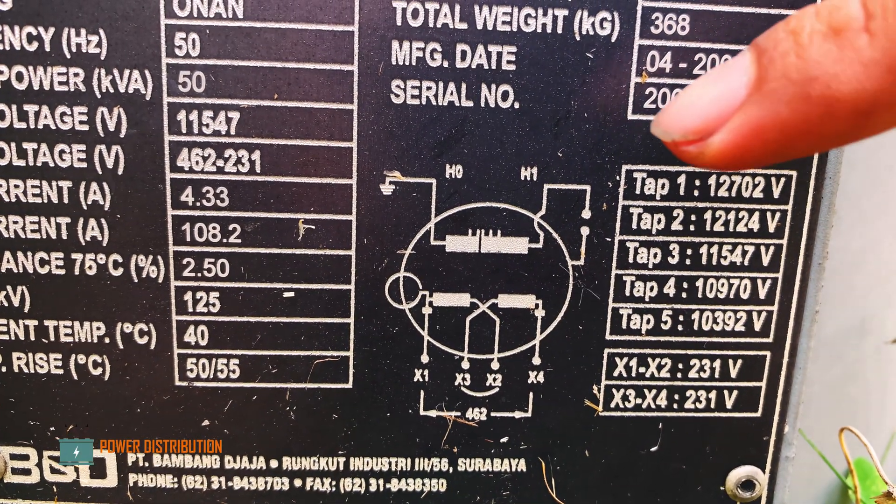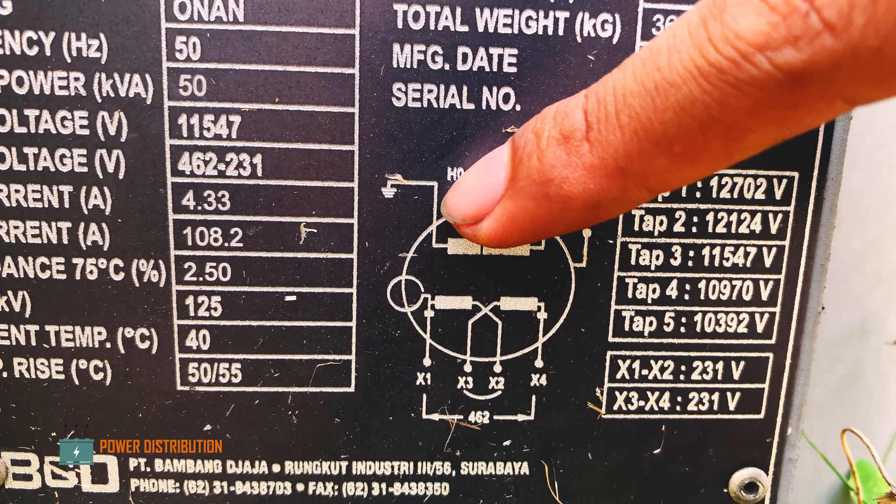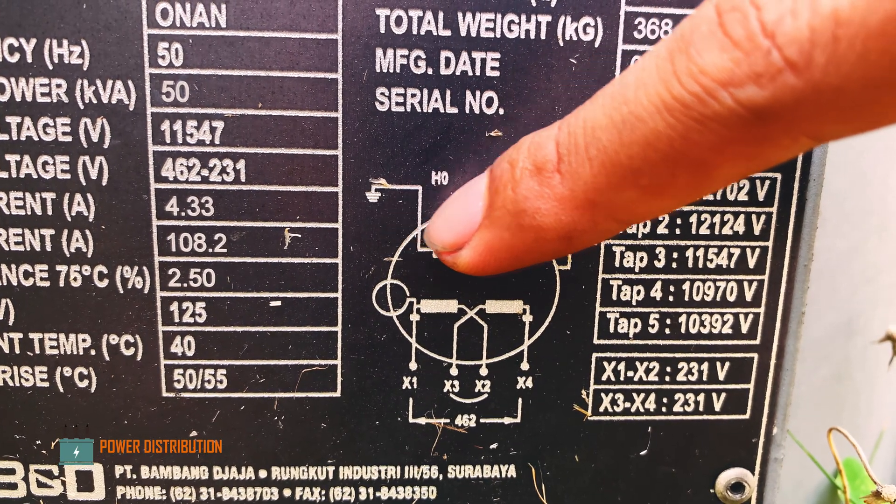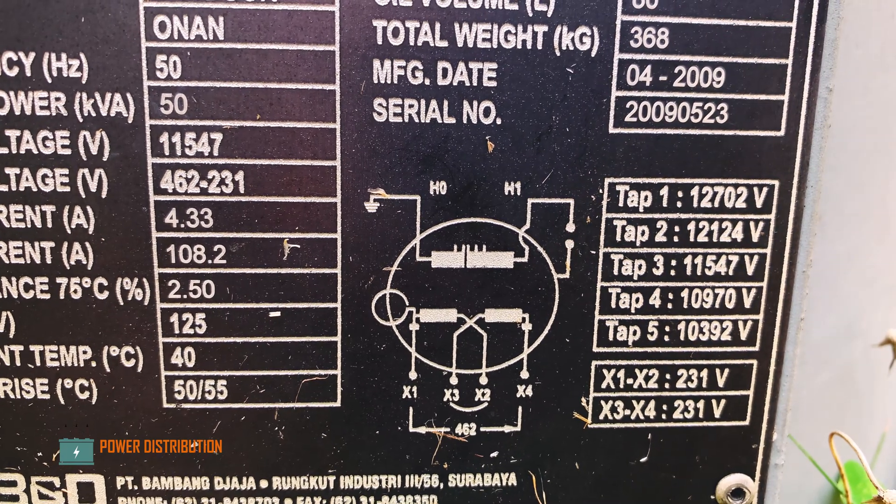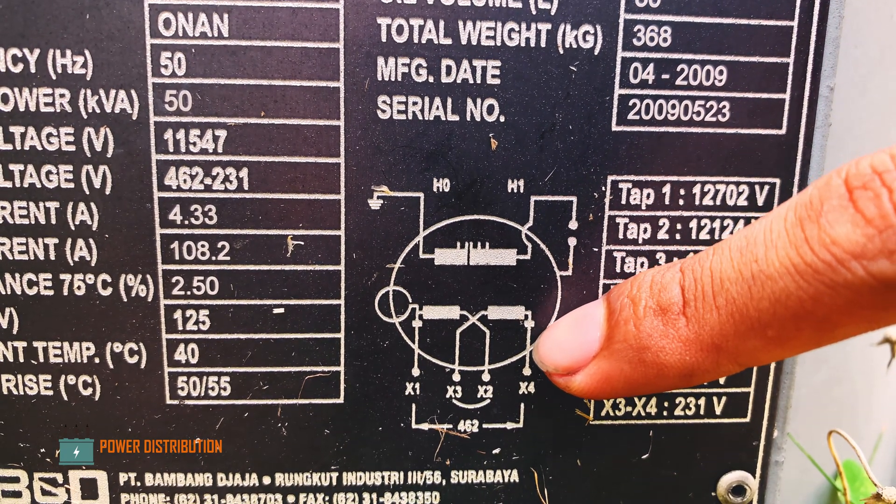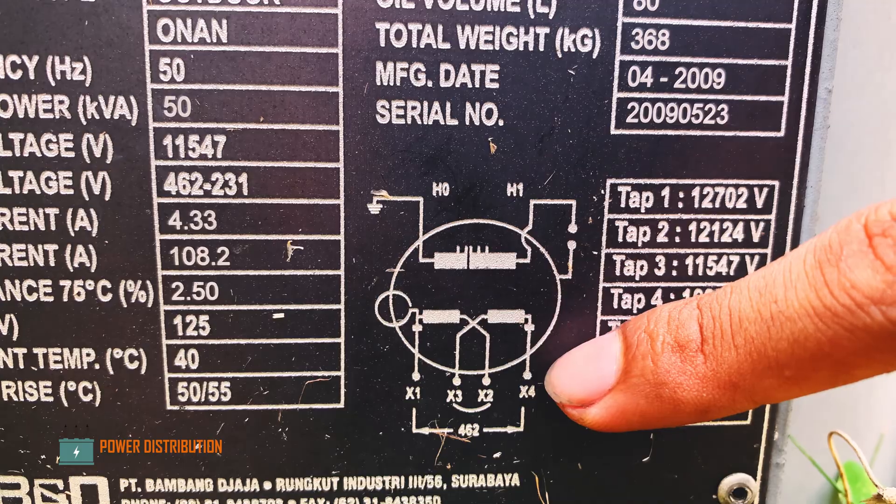As you can see, the primary winding H1 is connected to the live line and H0 is connected directly to the ground. The secondary windings have two windings which float, not connected to the ground directly.